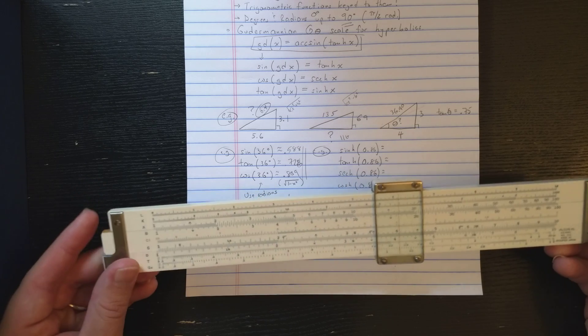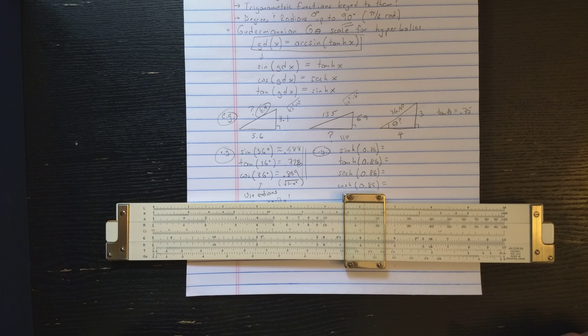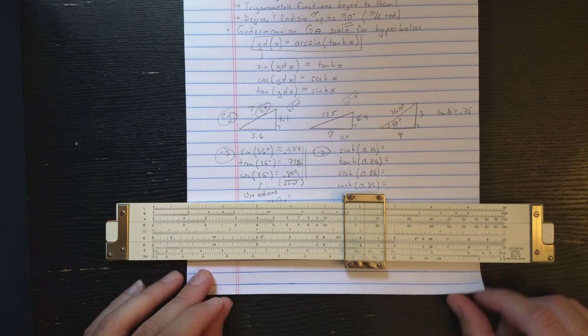But as far as I know, the HEMI 153 is the only slide rule with the Gudermanian scale. Somebody could correct me in the comments if they know of another one.